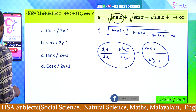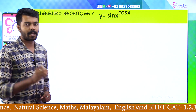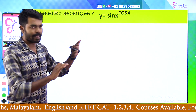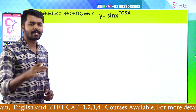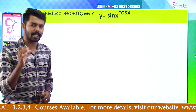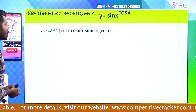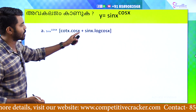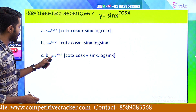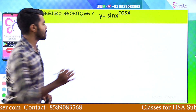So, if you want to talk about this trick, the equation is y = sinx raised to cosx. Now the second question options are: Option A — sinx^cosx · (cotx·cosx + sinx·log cosx); Option B — sinx^cosx · (cotx·cosx − sinx·log sinx); Option C — sinx^cosx · (cotx·cosx + sinx·log sinx). And option D. We will do this now. This is the general form.